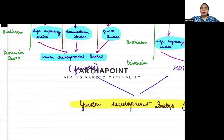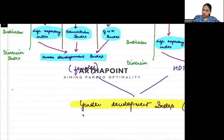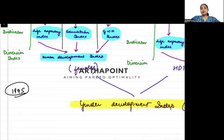One thing you need to remember is that the Gender Development Index was also introduced by UNDP — the United Nations Development Programme — and it was introduced in the year 1995. The aim was to understand how there is a difference between the Human Development Index of females and males, and how much difference exists between the two.